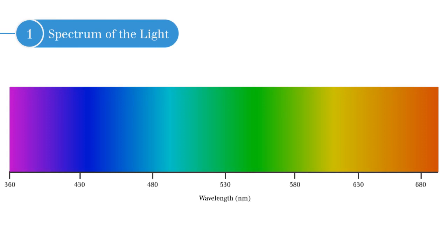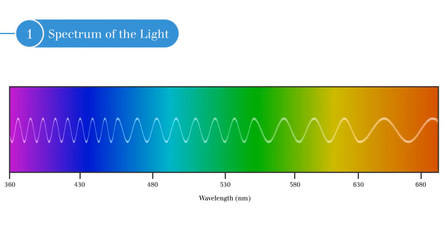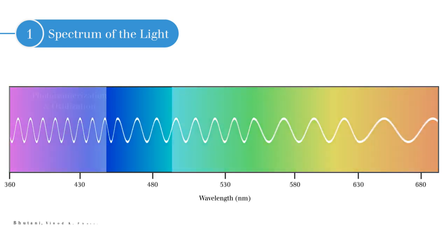The first consideration is the spectrum of light. Light is electromagnetic radiation within a portion of the electromagnetic spectrum. Specific wavelengths of visible light trigger photoisomerization and oxidization. Blue light